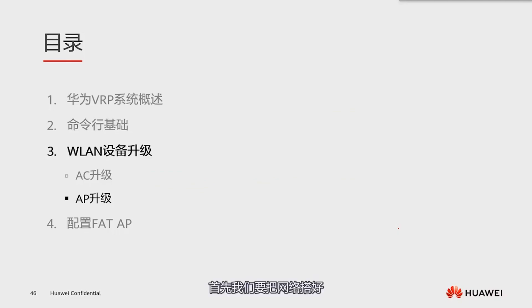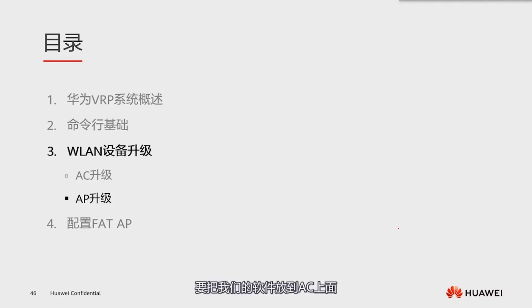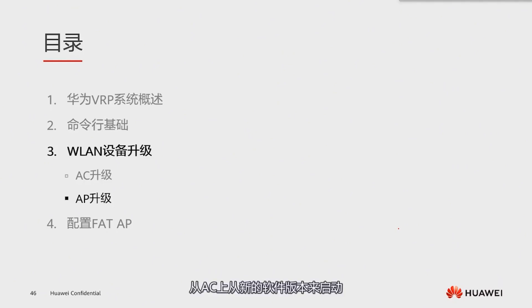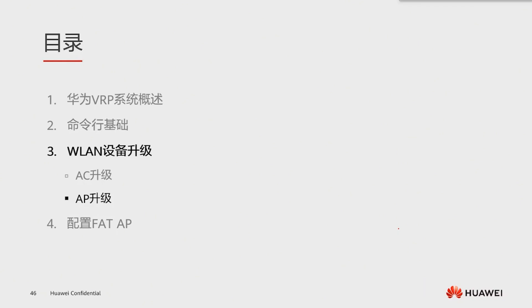That's the AC upgrade process. First, ensure the network is properly set up. Then we need to load our software onto the AC by any available means and set it for the next startup, so the AC boots from the new software version. This completes the upgrade. The AC upgrade is relatively simple.